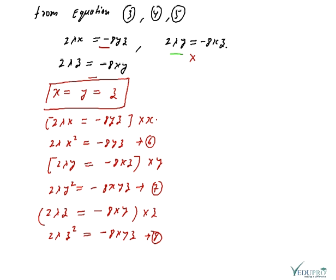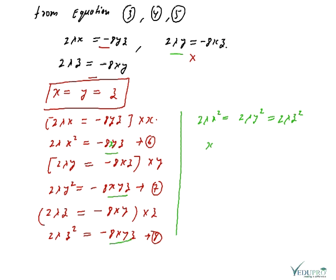Now observe that in equations 6, 7, and 8, the right-hand sides are all equal to −8xyz. Therefore we can write: 2λx² = 2λy² = 2λz², which gives us x² = y² = z².